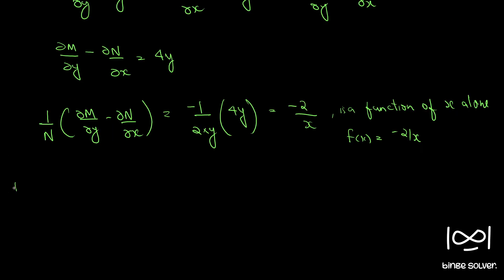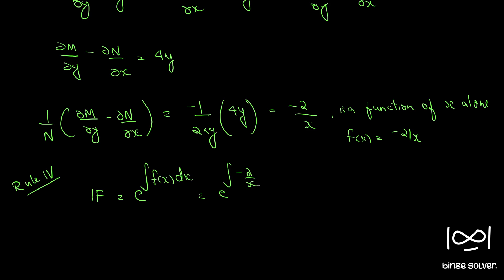In such cases, Rule 4 applies. Rule 4 says our integrating factor equals e raised to the integral of f(x) dx, which is e raised to the integral of (−2/x) dx, giving e raised to −2 log x, which equals 1/x². So our integrating factor is 1/x².